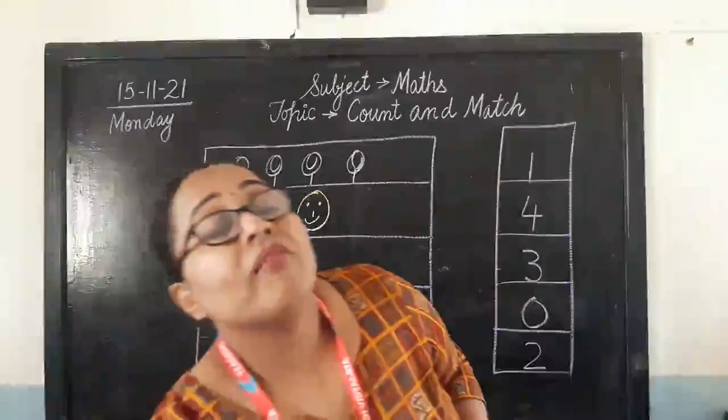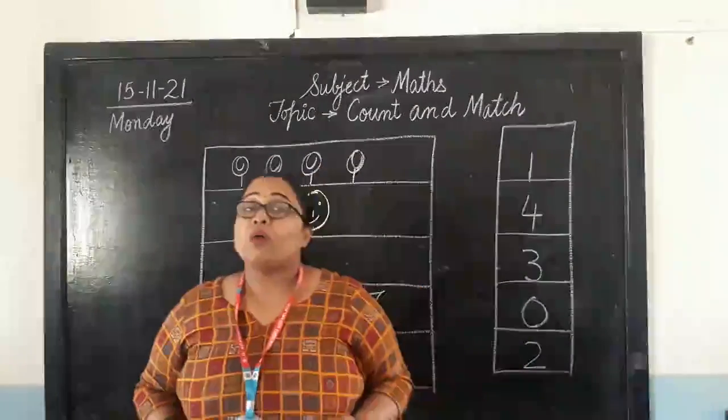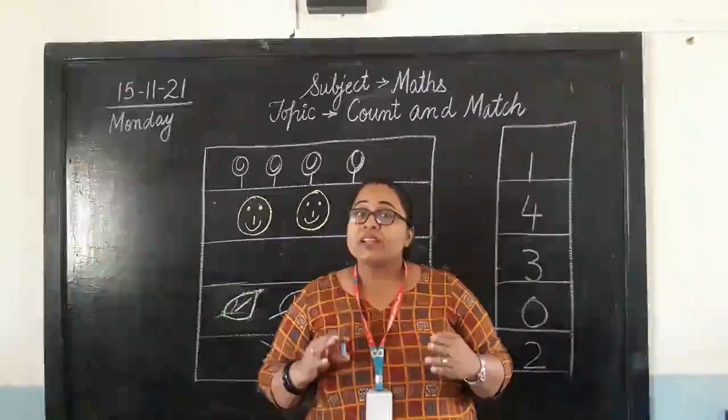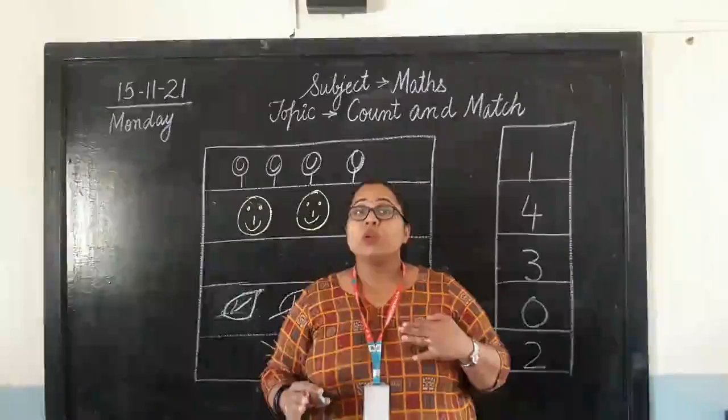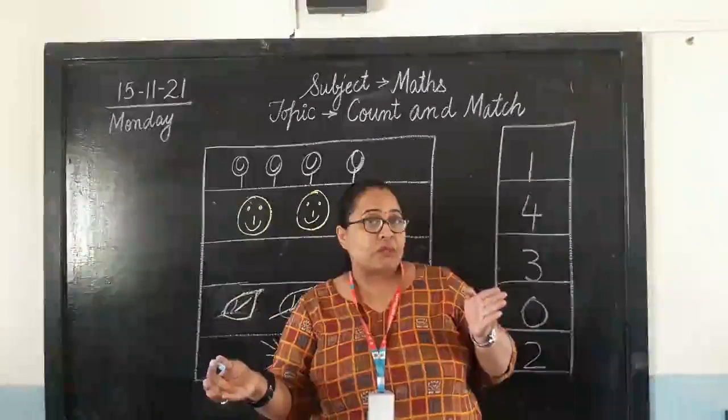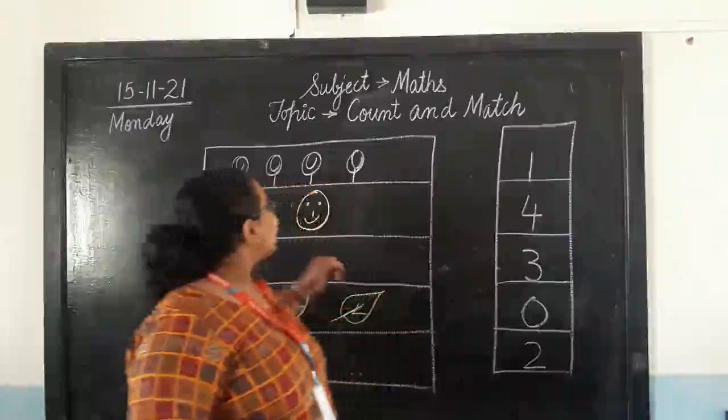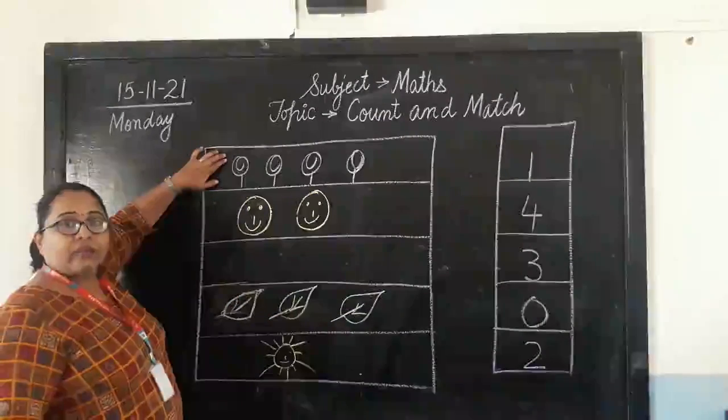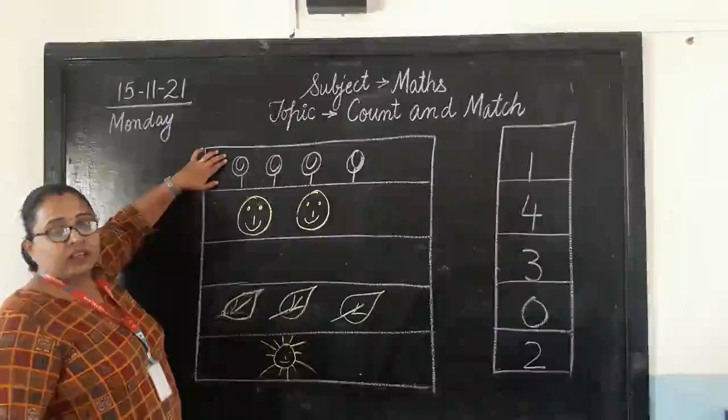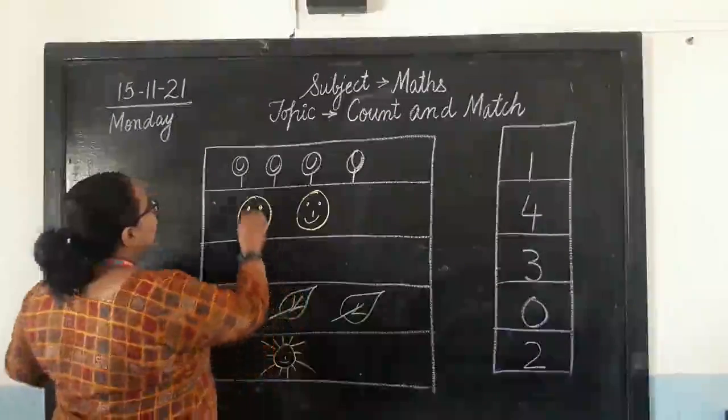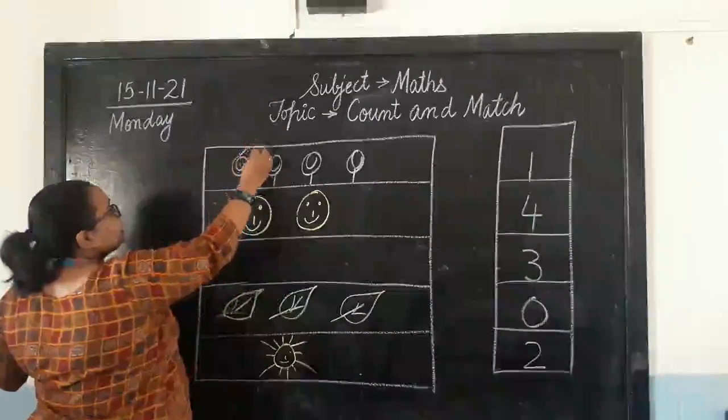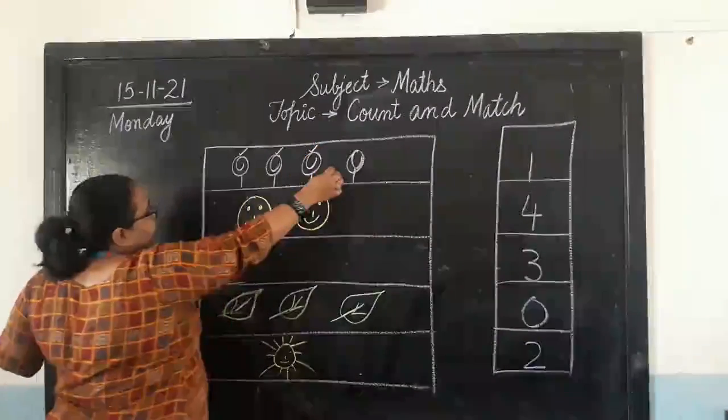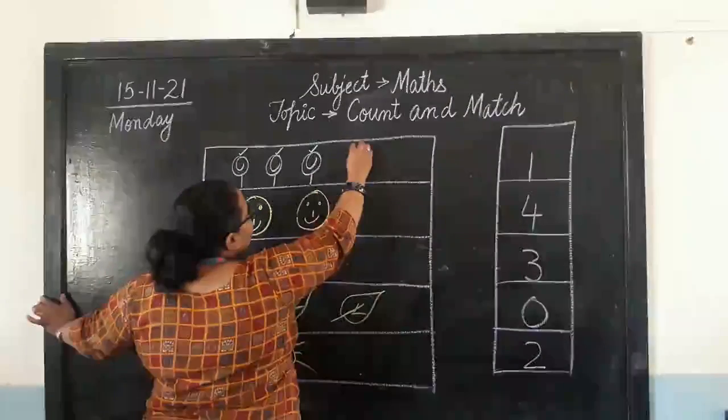Now, to have a better clarity, we are going to use different colors for different numbers. So that it is easily clear to everyone which object is matched with which number. Now, let's count the first box. We are given some lollipops. Let's count them all together once. 1, 2, 3, 4.